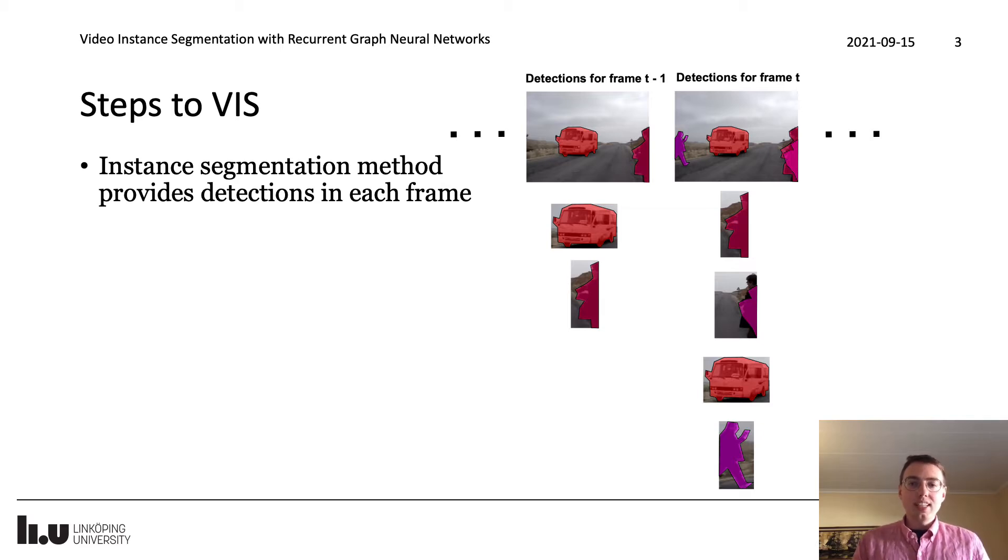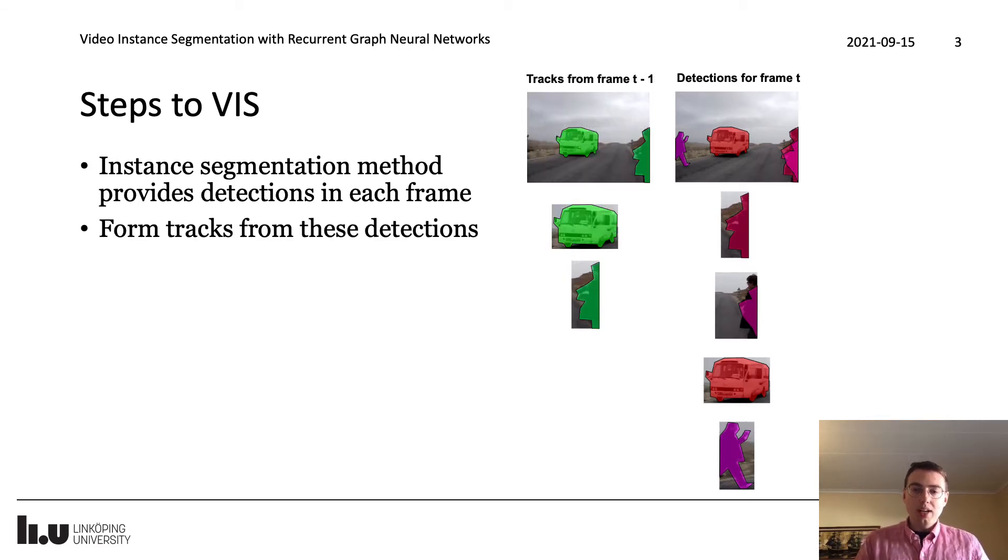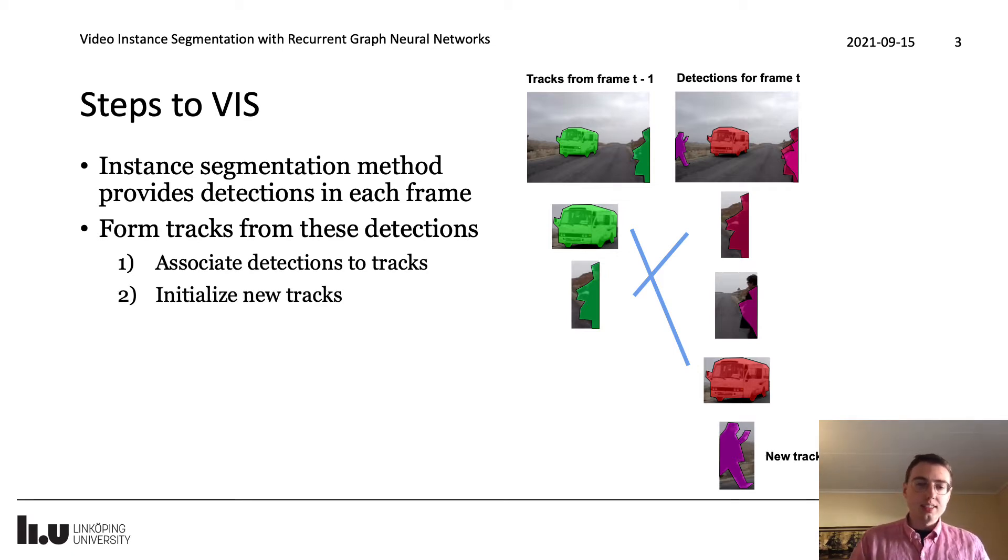Most prior works rely on an instance segmentation method to obtain detections in each frame and then form tracks out of these detections. In this work we take a causal approach where we proceed frame by frame. In frame t, the method has already tackled the video instance segmentation problem up to frame t minus one, and now it intends to tackle it up to frame t for the current frame. We have a set of tracks corresponding to objects we believe we've previously seen, and we get a set of detections in frame t. We need to segment the tracks that we have settled on.